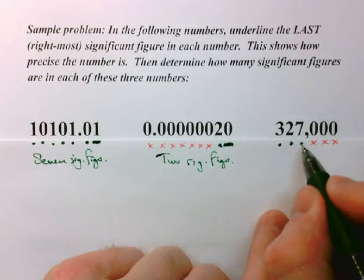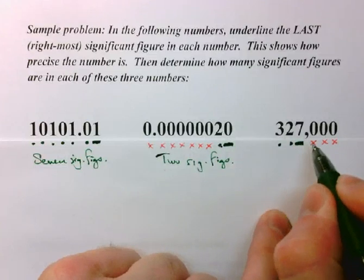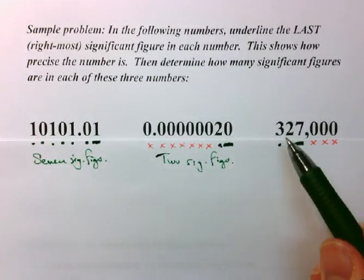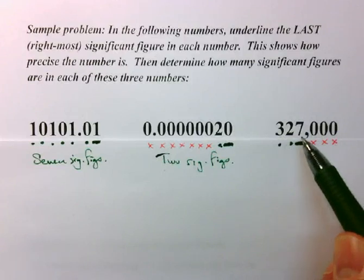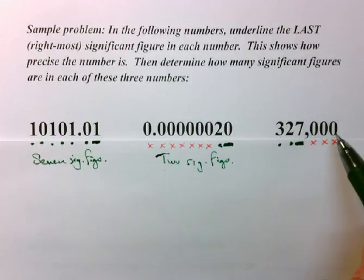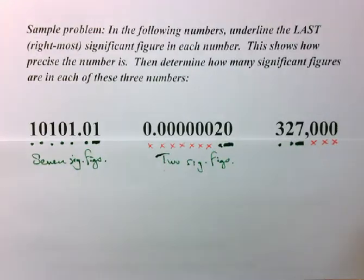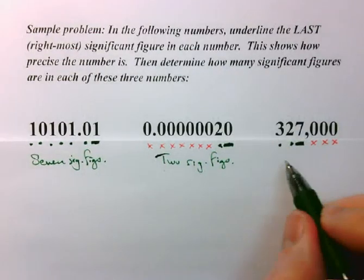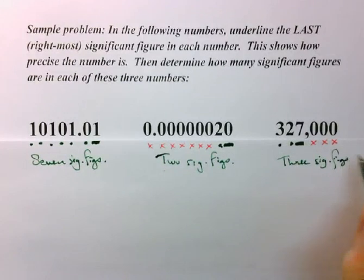Therefore, our last or rightmost sig fig is this seven right here. I'll underline it. Therefore, this number is precise only out to the thousands place. And there are one, two, three, three sig figs in this number.